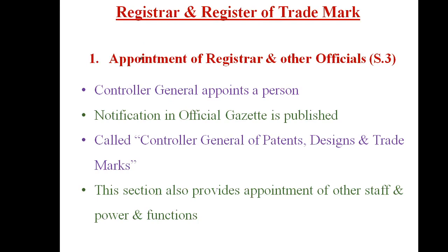Every trademark which a proprietor wants to use has to be registered with proper procedure of registration. Therefore a special officer is appointed known as a registrar, and this registration is made in the register of trademark — it is the book where the trademark is registered.